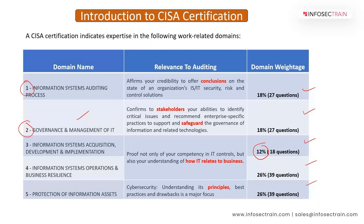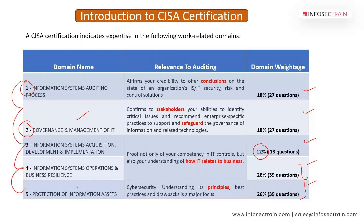The weightages represent the number of questions asked from each domain, but the scoring formula for each domain is something only ISACA knows. Each domain has certain weightage, but that doesn't mean you jump directly to domains four and five because they have 78 questions. Each domain is equally important because these domains are interlinked. A question may appear to be from domain four but is actually checking your concept of auditing or governance.